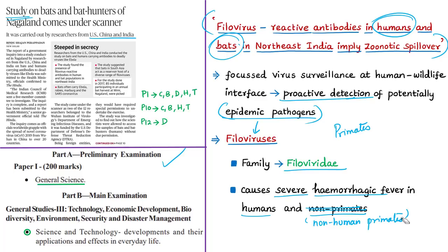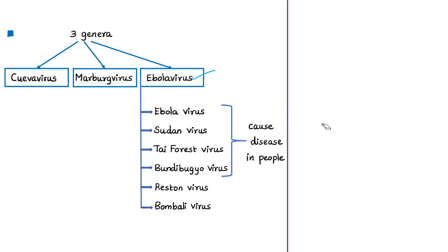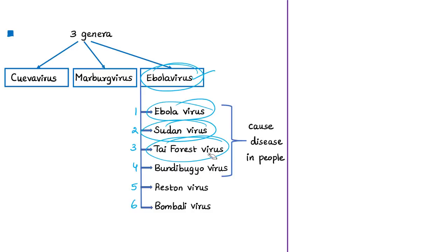Three genera of the Filoviridae family have been identified: Cuevavirus, Marburg virus, and Ebola virus. Among these, six species of Ebola virus have been identified: Ebola virus, Sudan virus, Taï Forest virus, Bundibugyo virus, Reston virus, and Bombali virus. Out of these six species, only four are known to cause disease in people, and Ebola virus is one of them.